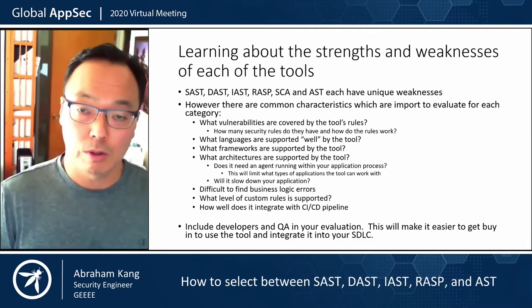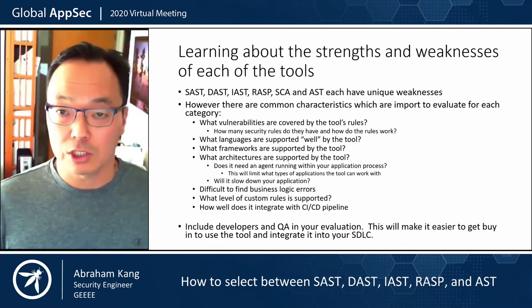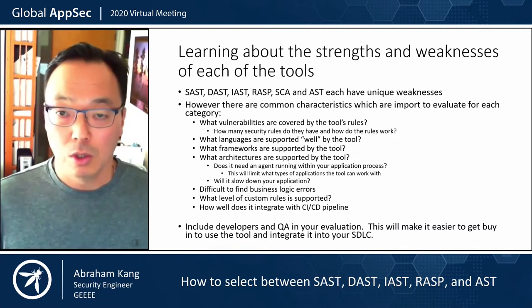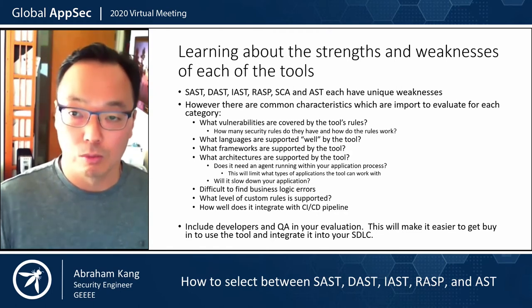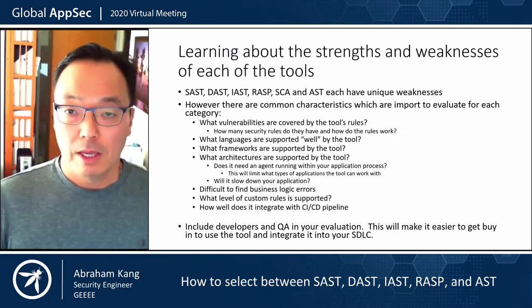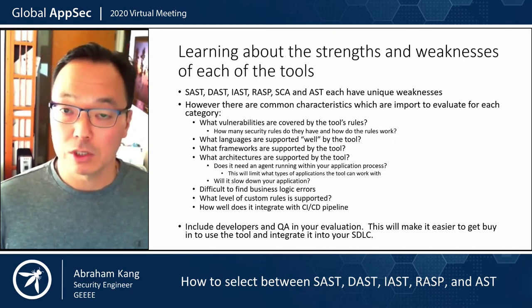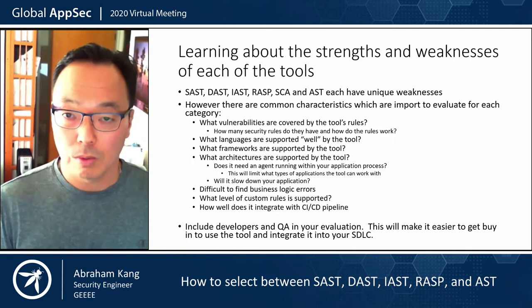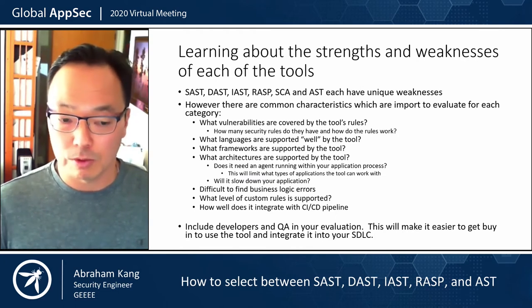Some tools might support custom rules that are simple grep scripts. Other tools may have custom rules which allow you to manage state, control flow, look at your code and set up variables that other rules can build off of. Finally, you want to understand how well these tools integrate with your CI/CD pipeline, because everything today in app security is about shifting left — getting security in earlier within your processes and finding those problems as early as possible when it's cheaper to fix.